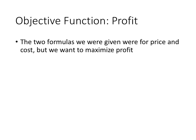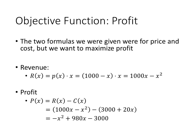So our objective function is profit. Profit is the thing that we want to maximize. But the two functions that we were given were price and cost. So what we need to know is how to get from price and cost to profit. Well, remember those principles that we talked about before. Revenue is price times quantity.